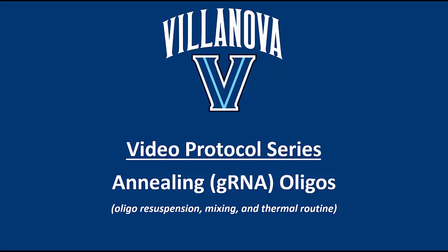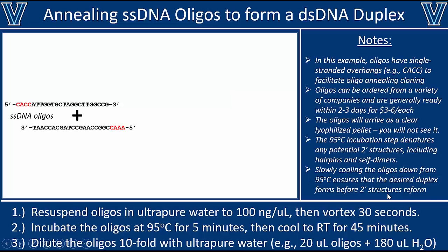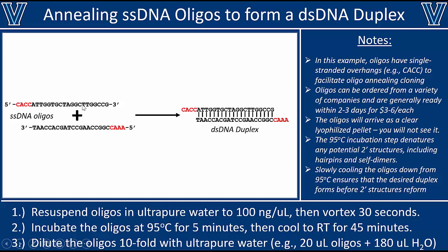Hi everyone. In this relatively short video, I'll be showing you how to anneal two oligos together for oligo annealing cloning. For example, let's say you were trying to clone a gRNA sequence into a Cas9 expression plasmid. What you would do is get your gRNA sequence and design some oligos that have the gRNA sequence with a flanking sticky end.